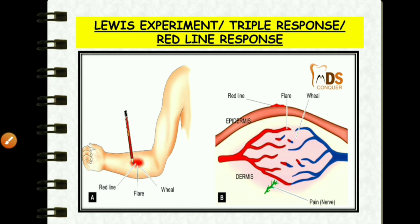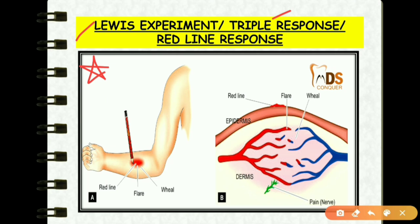These hemodynamic changes are elicited by the Lewis experiment, also called the triple response test or red line response. In this experiment, you stroke the inner aspect of the forearm with a blunt pointed instrument. A reaction is elicited and three responses are formed: the red line, flare, and wheal — hence it is called the triple response.